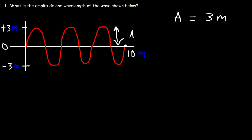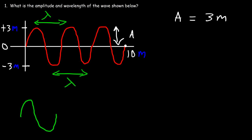To find a wavelength you could find the distance between the crests of the wave, the distance between the troughs, or the distance that it takes to complete one cycle. So from here to here. This is one complete cycle, that's two cycles, and that's three cycles.